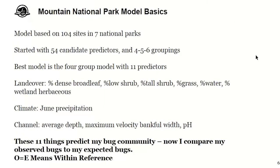Here are a few basics from the mountain national park models. This is a predictive model — not a theoretical one — it's based on field collections of reference sites. Our model ended up using 104 sites across the seven mountain national parks. When we started model building we looked at 54 candidate predictors and experimented with three different sizes of benthic invertebrate community groupings: a four-group, five-group, and six-group model. The best model for us is a four-group model with 11 predictors, and it explains about 80% of the variation in what's going on with the benthic community.